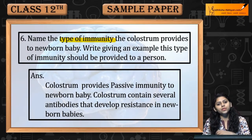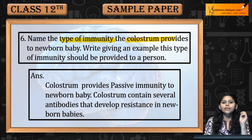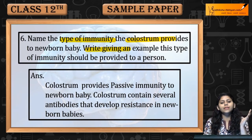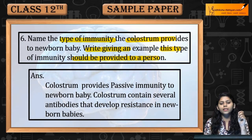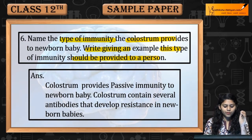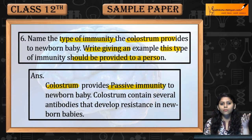Name the type of immunity that the colostrum provides to a newborn baby, giving an example of when this type of immunity should be provided to a person. Colostrum provides passive immunity to a newborn baby.